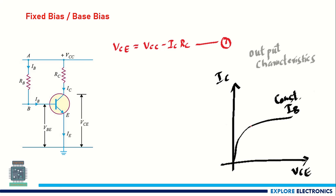Looking at the output characteristics of this amplifier circuit: in the common emitter configuration, IC is the output current and VCE is the output voltage. The graph shows how IC increases as VCE increases up to a certain level, after which IC becomes constant. This constant IC region is called the active region, while the rising portion at lower VCE is the saturation region.